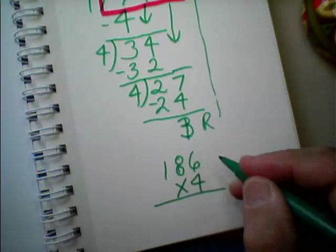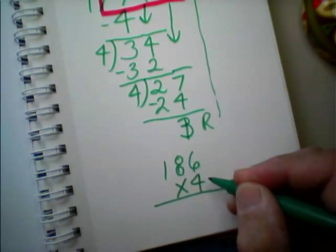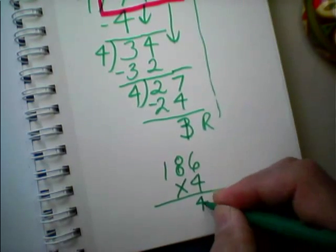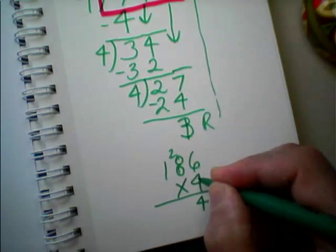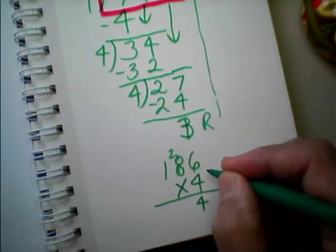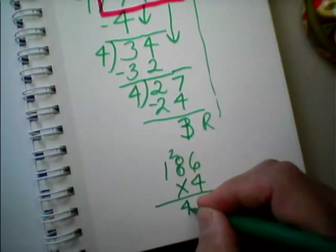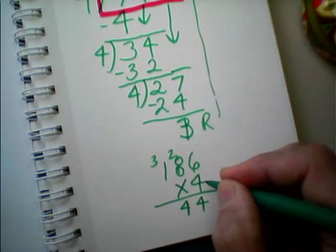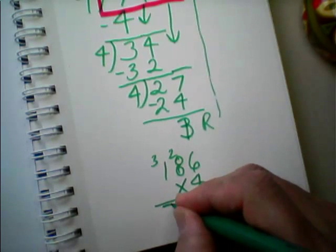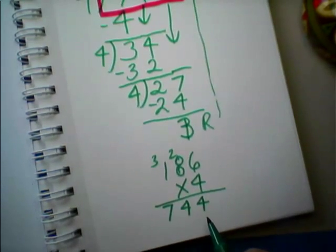I want you to write down 186 and multiply it by 4. Let me see how fast I can do it. 6 times 4 is 24, carry the 2. 4 times 8 is 32 plus the 2 is 34, carry the 3. 4 times 1 is 4 plus the 3 is 7. 744.